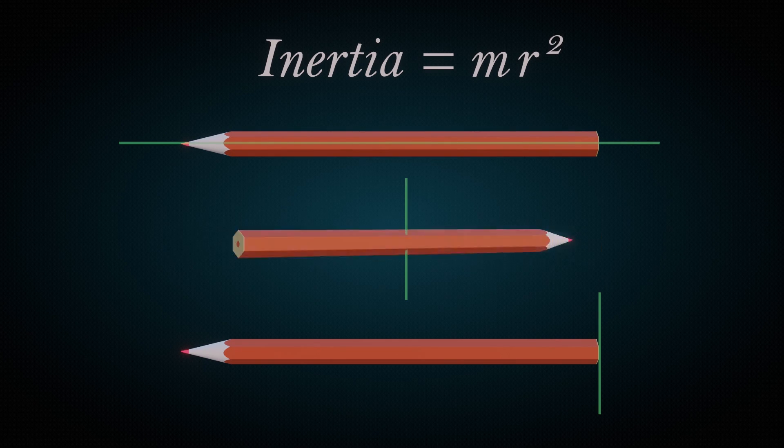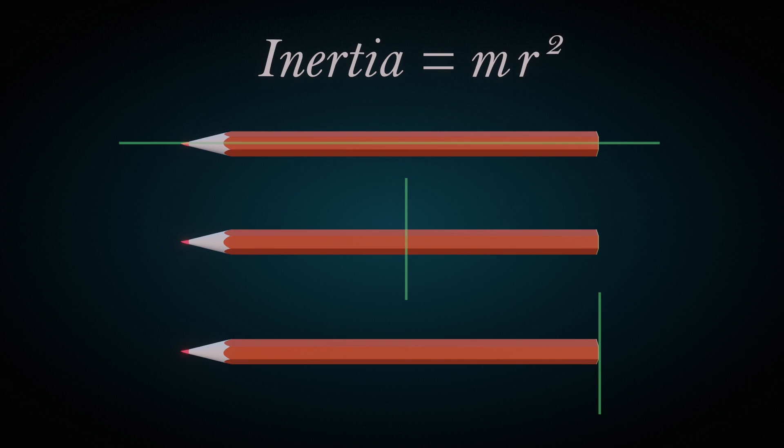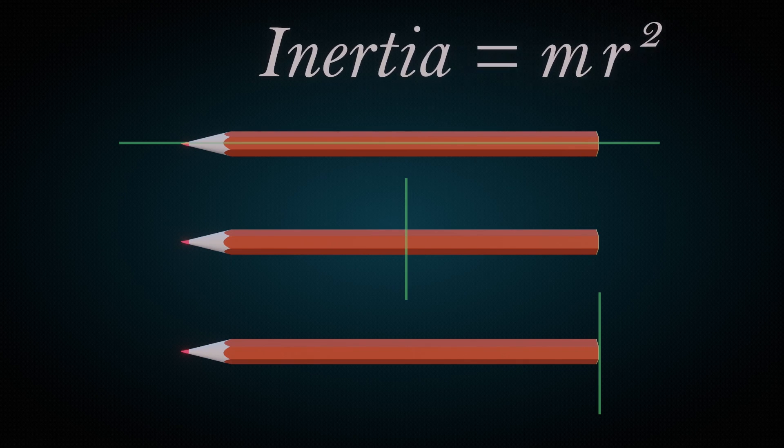About the second axis, mass distribution is far from the axis so rotational inertia is greater.